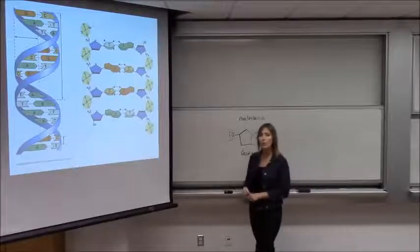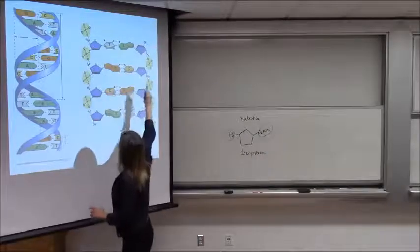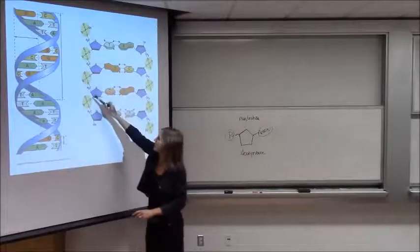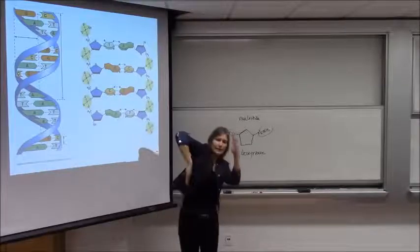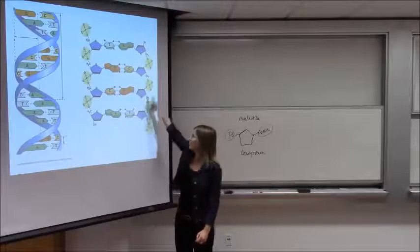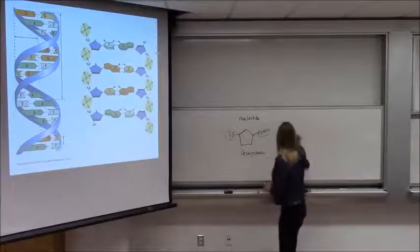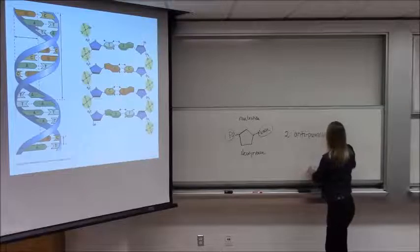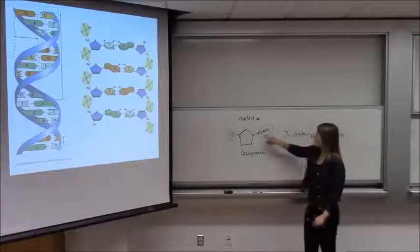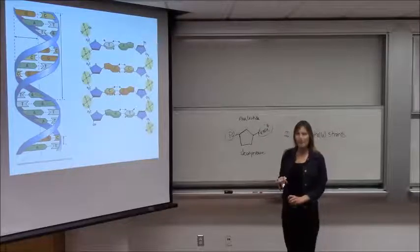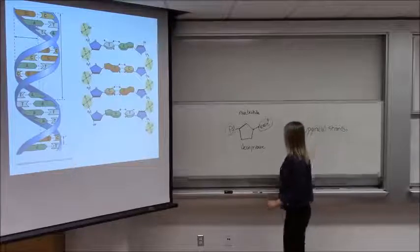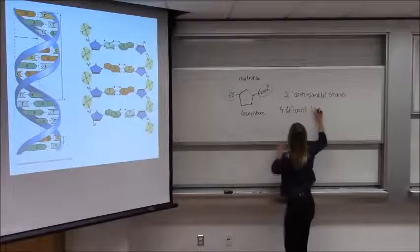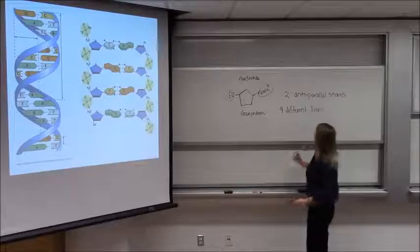In DNA we have two polynucleotide strings that run anti-parallel to each other. What I mean by that is when we string these all together, one runs this direction and the other one runs essentially this direction — you can see that one is upside down relative to the other. So two anti-parallel strands. You should also notice that the base can be one of four different bases for DNA — four different nucleotides that string together to make the DNA strand.